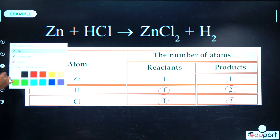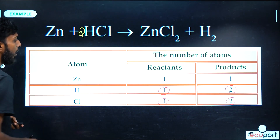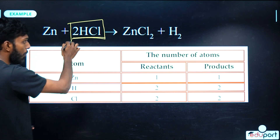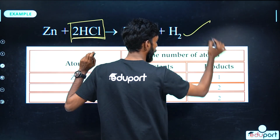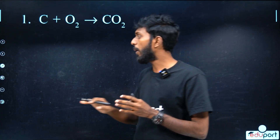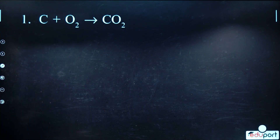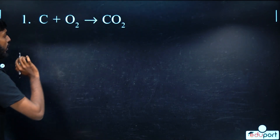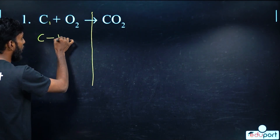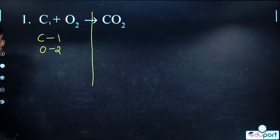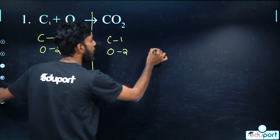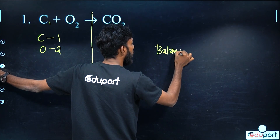Zn + HCl: hydrogen and chlorine are 2 times. Balance — we want to use a different example. Carbon plus oxygen is carbon dioxide. Carbon is 1 and oxygen is 2 — now it is balanced.